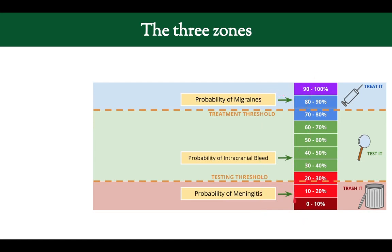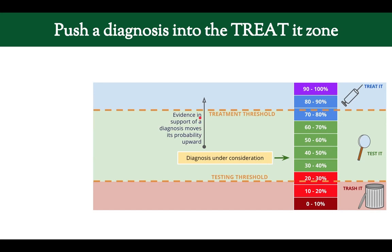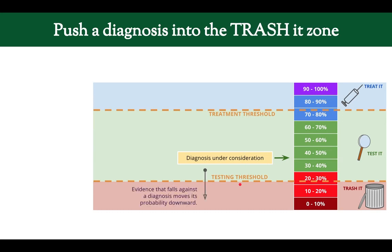This probability space is broken up into three zones: the trash-it, test-it, and treat-it zone. In the trash-it zone, we're sure enough that they don't have the diagnosis, so we're not going to pursue it any further — we just drop it. In the treat-it zone, we're sure enough that they do have the diagnosis — not 100% sure, but sure enough that we're going to start treatment. And in the middle test-it zone, we're neither sure enough to drop it nor sure enough to treat it, so we need more information and further testing. Evidence in favor of a diagnosis pushes it up; evidence against pushes it downward.